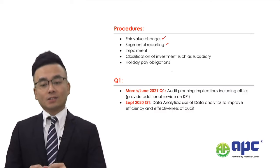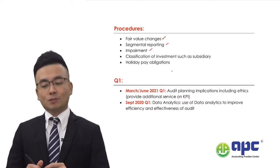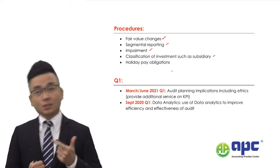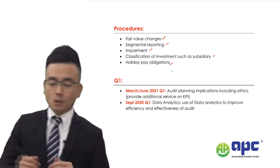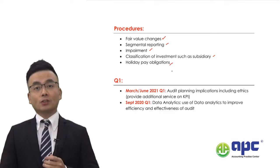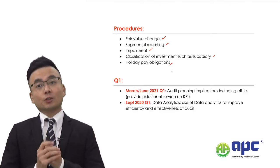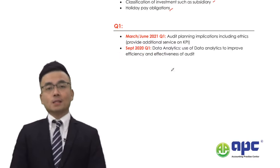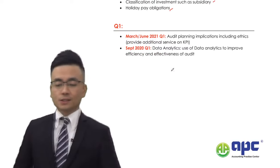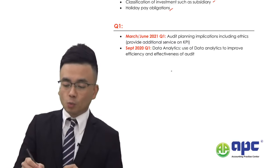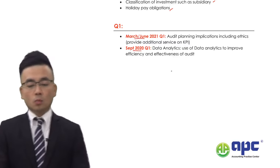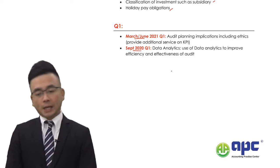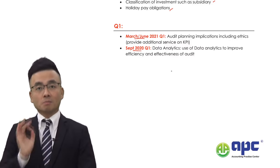Procedures related to IFRS 8 segmental reporting, IAS 36 impairment of non-current assets, and the classification of investments such as subsidiaries, associates, and joint ventures. Also audit procedures related to holiday pay obligations, pensions, and share options. The final area to recap on in question 1 is two past exam questions — one from March/June 2021 and one from September 2020 — related to KPIs and data analytics.